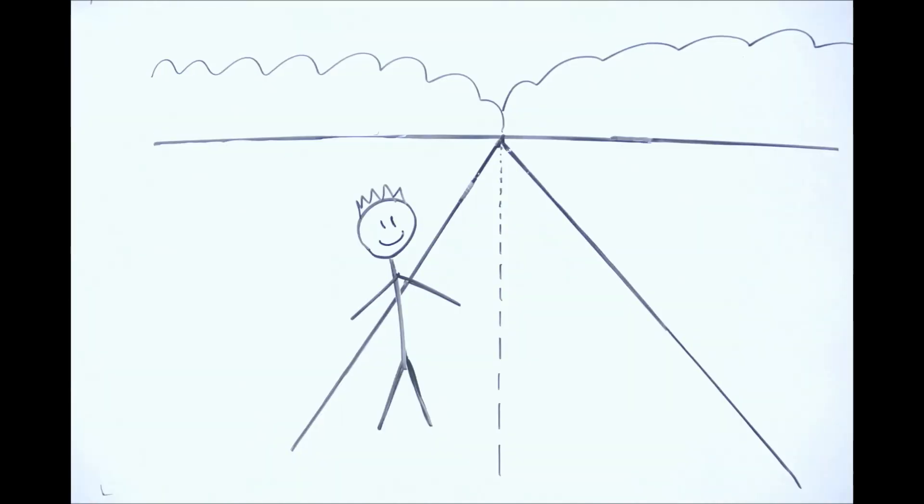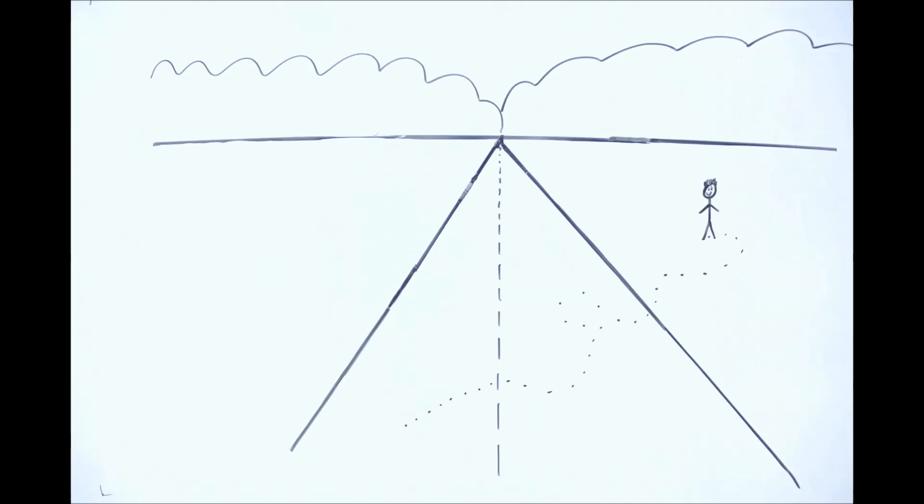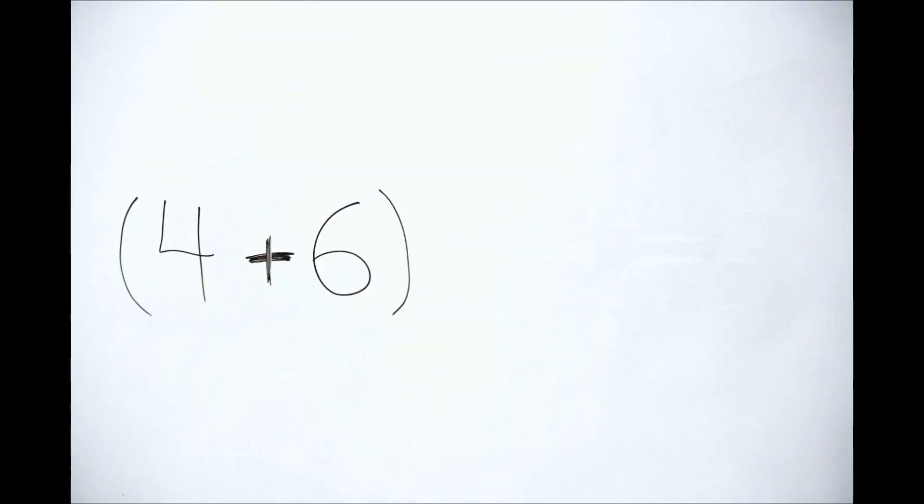If a student wishes to stray from the order of operations, they must state each part of the equation parenthetically by stating the intermediate solution. 6 minus 4 is 2, 2 times 2 is 4.